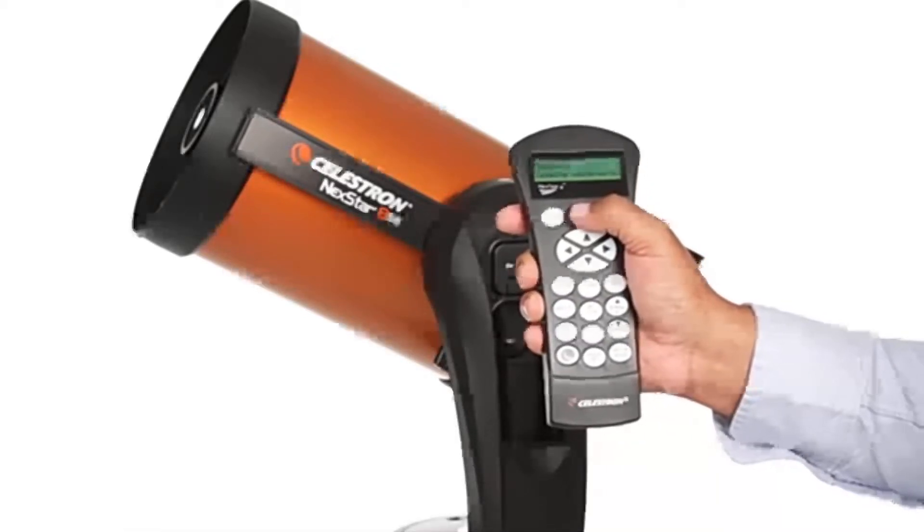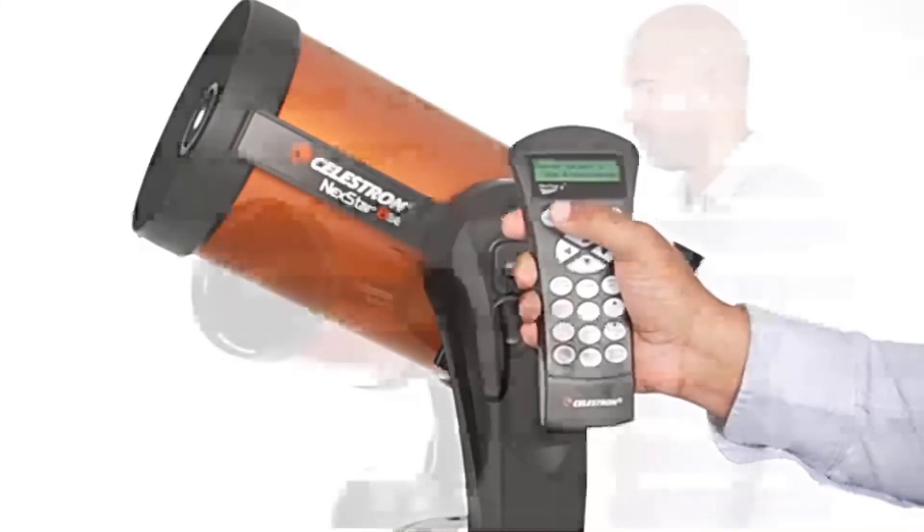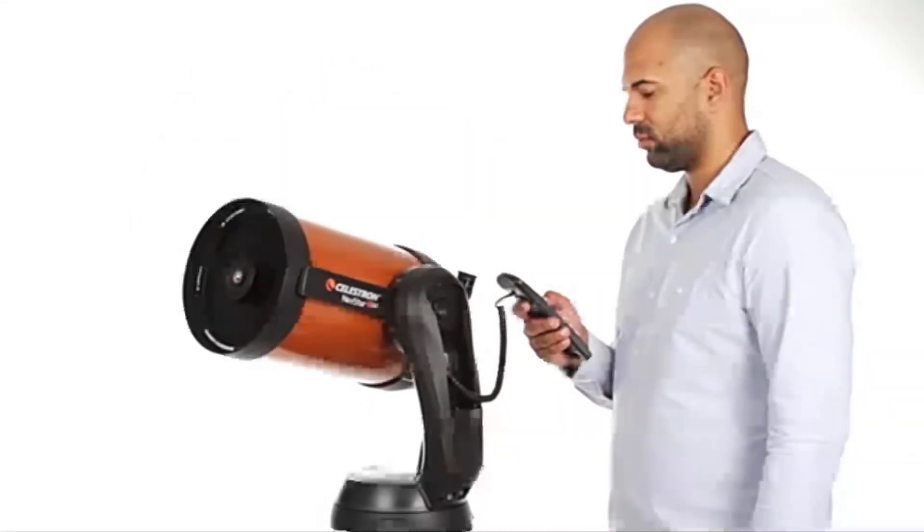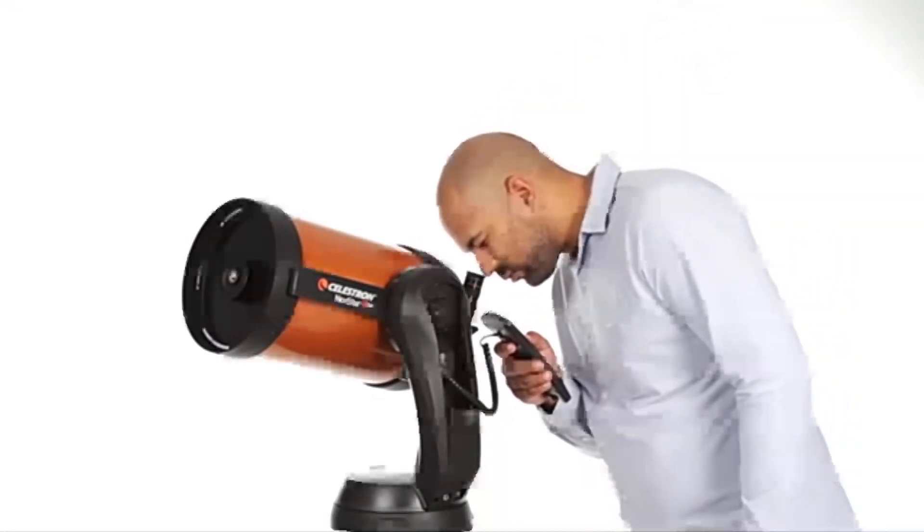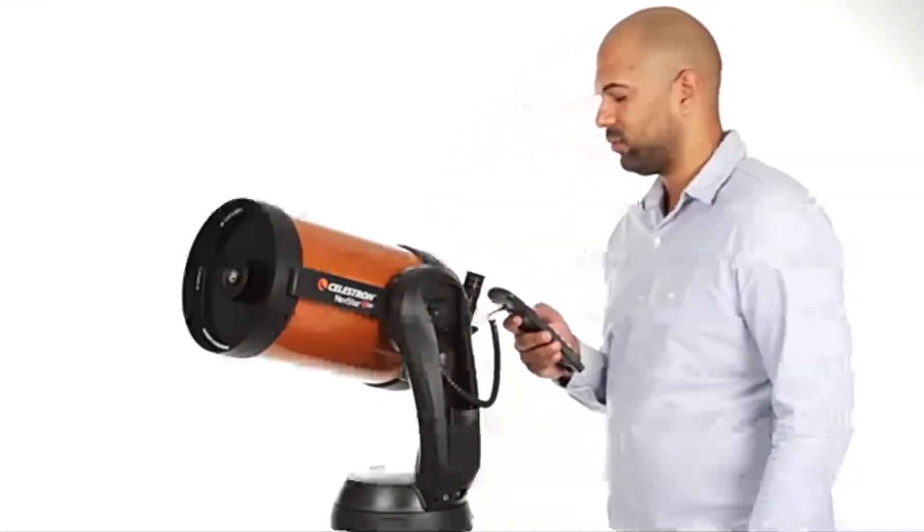Choose from thousands of objects in Nexstar SE's database, then the computerized fork arm mount accurately points your telescope, centers your object perfectly in the eyepiece, and tracks it as it moves across the sky.